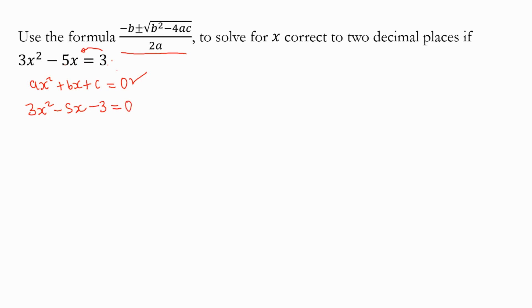Our formula is x is equal to minus b plus or minus the square root of b squared minus 4ac, all this over 2a. Now let's do the substitution.